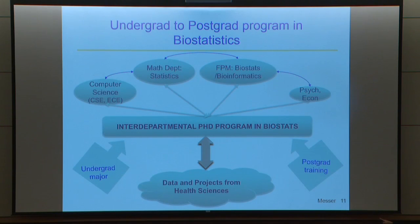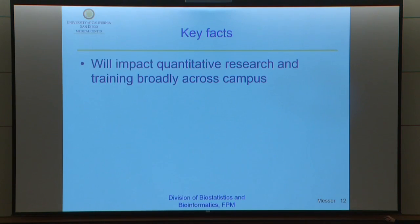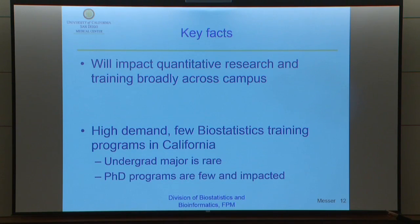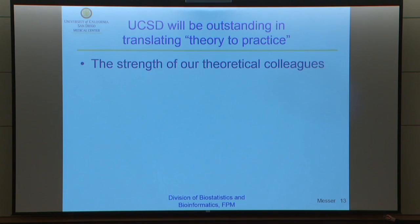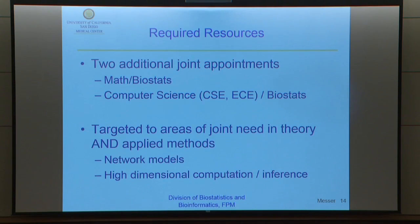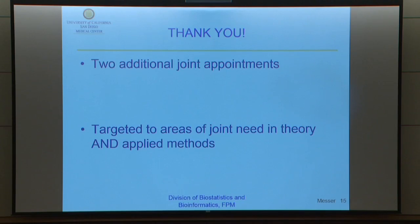Our proposal: we have initiatives to put in an undergraduate major, an interdepartmental PhD program, and postgraduate training. There are opportunities in all three of these areas that we're pursuing. The idea is that this would impact quantitative research and training broadly across campus. The vision is an army of PhD students in biostatistics looking for applied projects on which to do their theses, with theoretical faculty backing them up. There's high demand and few biostatistics training programs in California. The undergraduate major is very rare — I think there are only two undergraduate majors so far nationwide. And we are uniquely qualified at UCSD because of the strength of our faculty. Thank you.